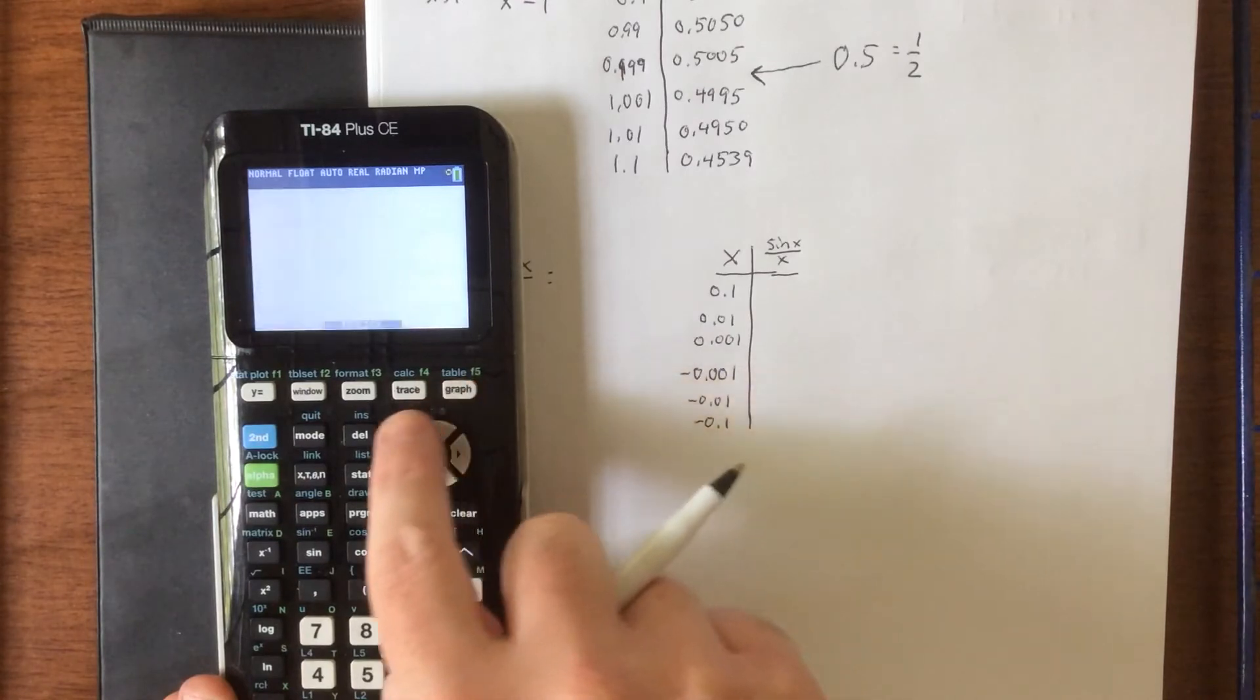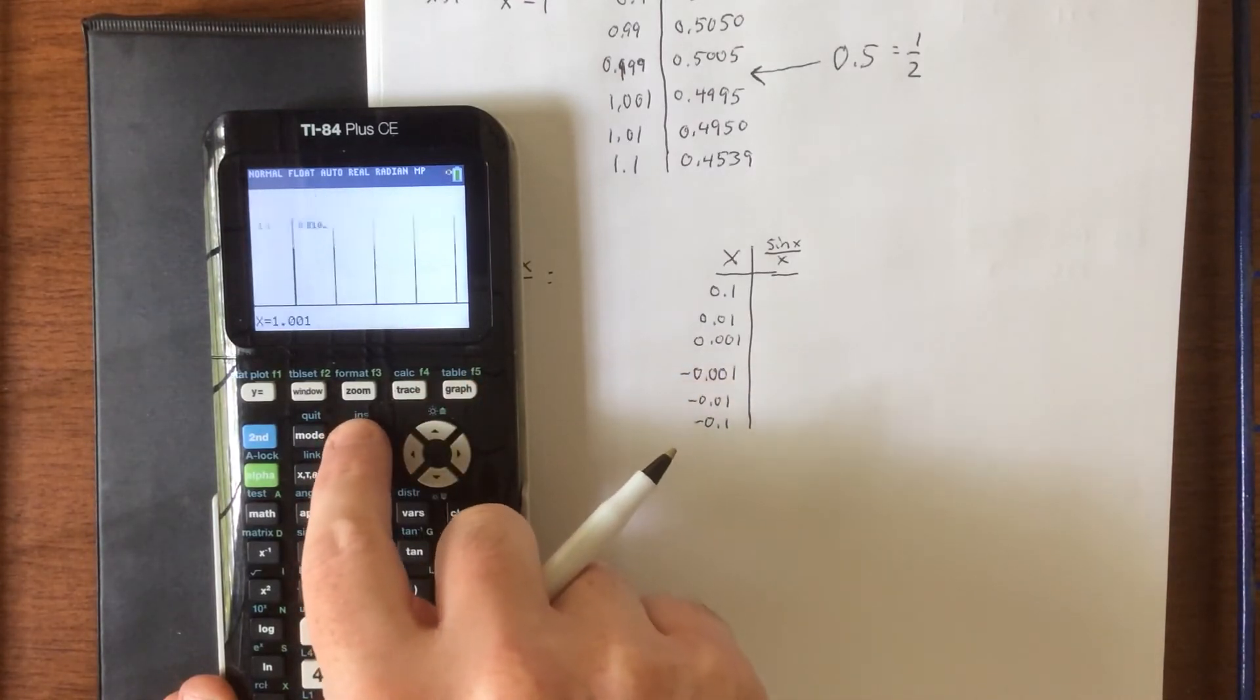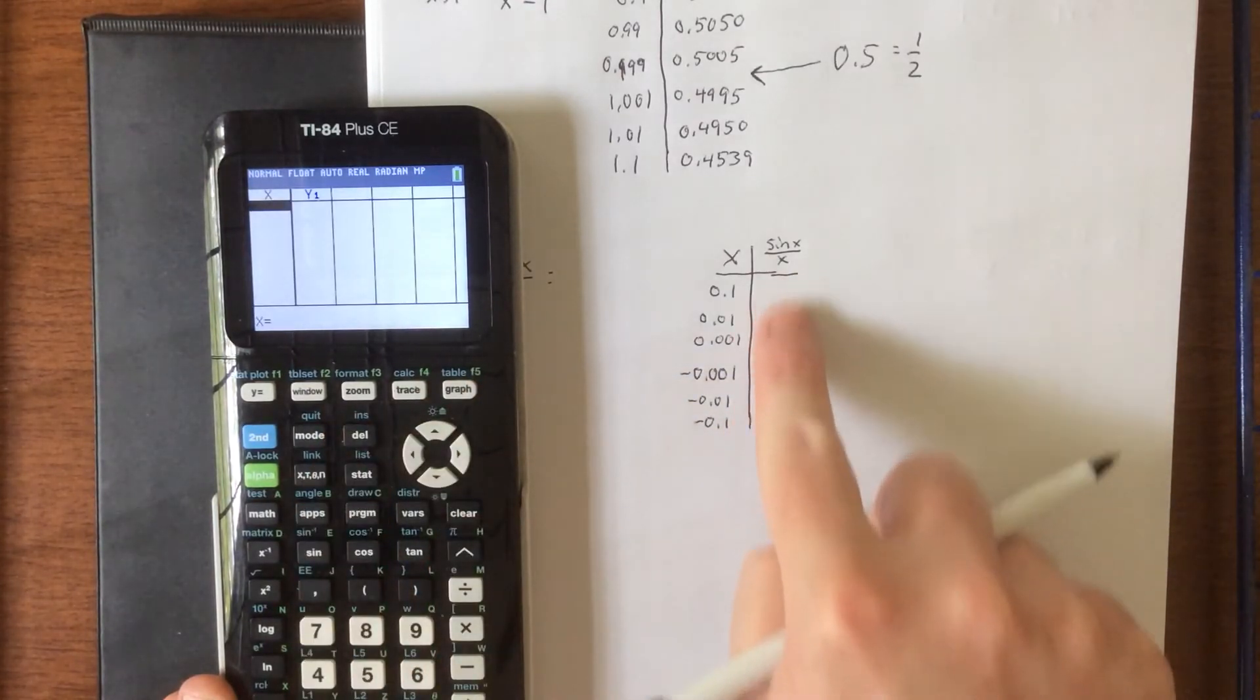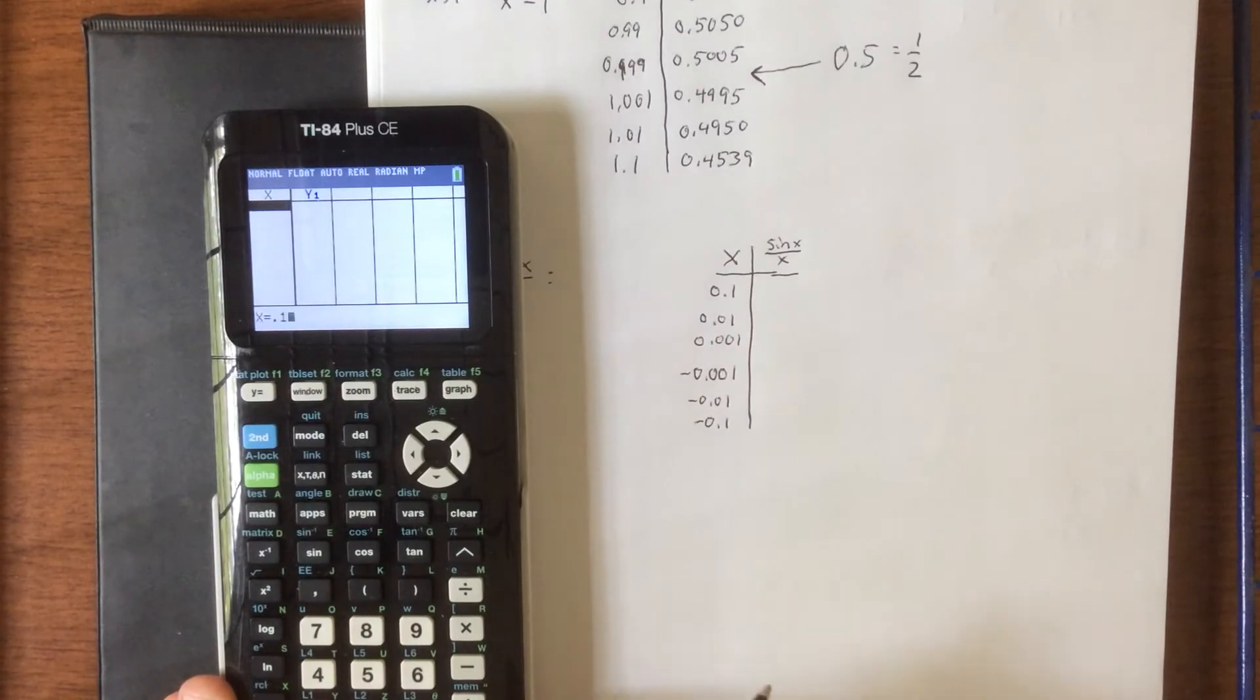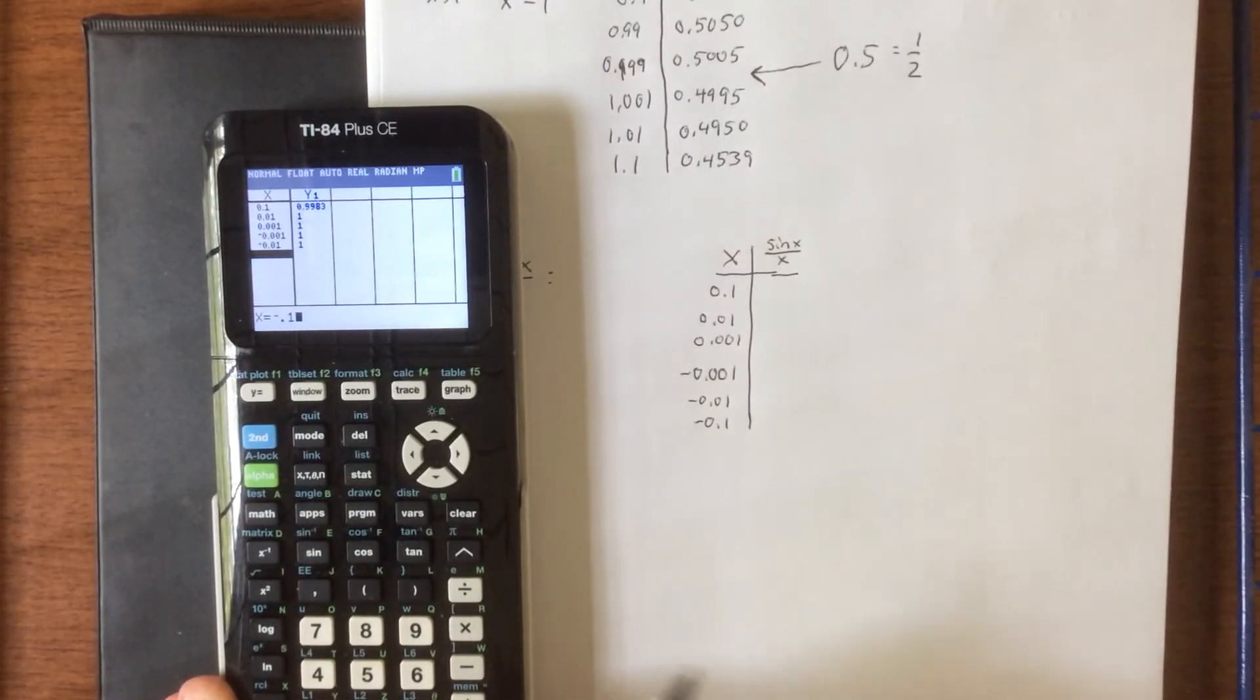Then we'll open up the table feature, clear out what we did last time, and I'll start plugging in these values from the table. So 0.1, 0.01, 0.001, negative 0.001, negative 0.01, and negative 0.1.